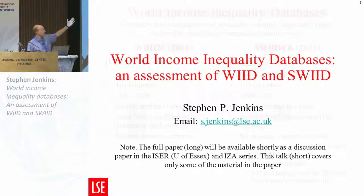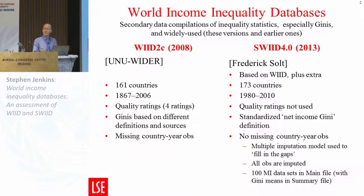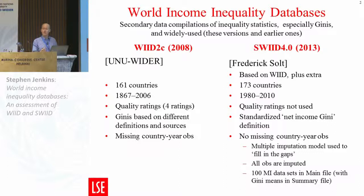I have two sources — the WID and the SWID — which are secondary data compilations, primarily Gini coefficients. These are very widely used, particularly the WID, because that's been around the longest and has been out in several versions, going back to its ancestor, the Deininger and Squire dataset from the World Bank. SWID is a new kid on the block but is doing quite well. We heard from Andrew Berg this morning about a paper based on the SWID.